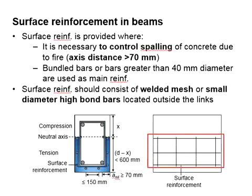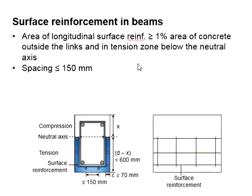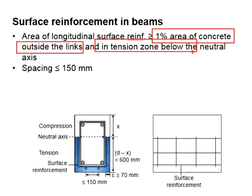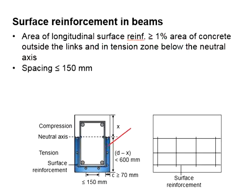It looks something like this, which is in the form of a steel mesh. The total area of the surface reinforcement should be greater than 1% of the concrete area outside the stirrups and in the tension zone, which is colored in blue here. The maximum spacing of surface reinforcement will be 150 mm.